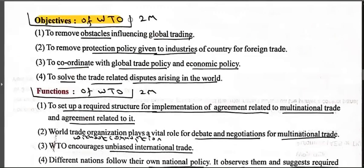Objectives of WTO — two marks. First: to remove obstacles influencing global trading — any kind of difficulty in import or export, it is WTO's job to solve it. Second: to remove the protection policy given to industries of the country for foreign trade — whatever protection policies exist related to industries for foreign trade, WTO removes them and makes trade easier.